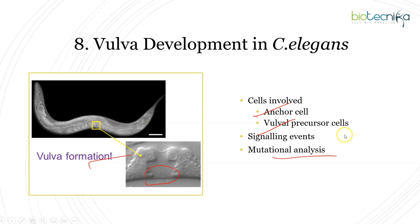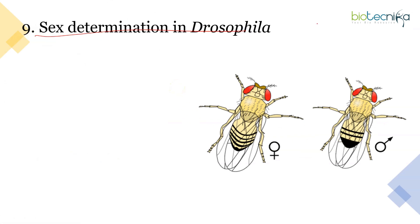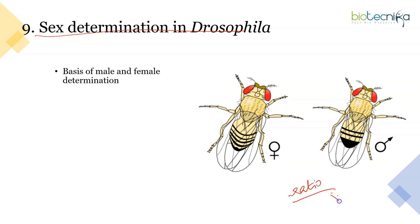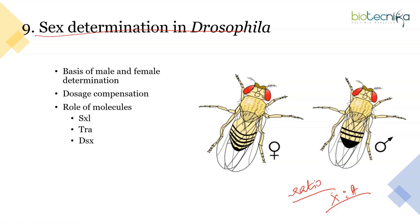Another important topic is sex determination in Drosophila. Know the basis of male and female determination — unlike mammals with X and Y chromosomes, here the basis is the ratio of X chromosomes to autosomes. Know what happens when the ratio is greater than one, equal to 0.5, or somewhere in between. Know dosage compensation and the roles of molecules such as Sex lethal, Transformer genes, and Doublesex, including the alternate splicing involved in male versus female determination.